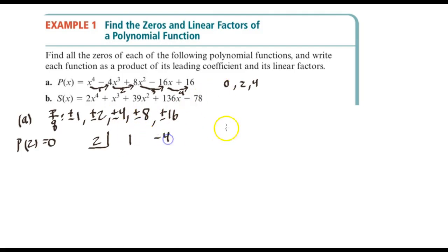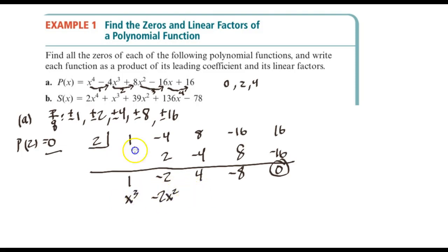One, negative four, eight, negative 16, and 16. And we'll divide really quickly. And we have one, two is negative two. Two times negative two is negative four. Add down, we get four, eight, negative eight, negative 16, and that gives us zero. And as we would expect, the same result, the remainder is zero. So this gives us x to the third minus 2x squared plus 4x minus 8 for our result.